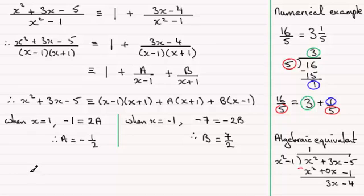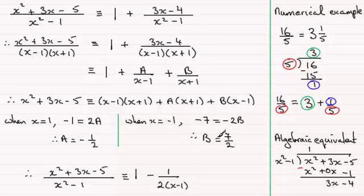So all we need to do now is just substitute our values of A and B back into our identity. So if we start with x squared plus 3x minus 5, all divided by x squared minus 1, we can see that this is identical to the 1. Then it says plus A over x minus 1. A is a negative value, so we just can replace that with minus, and it'll be 1 divided by 2 times x minus 1. And then we've got plus B. B is a positive value, so it's going to be plus 7 over 2 times x plus 1. And there you have it, your partial fractions.